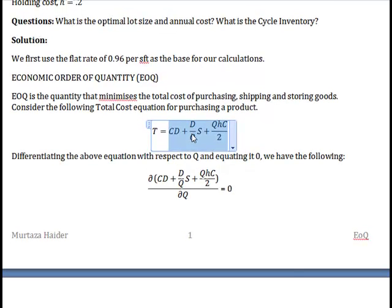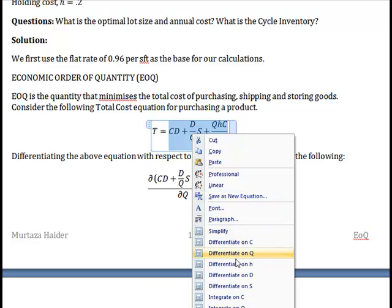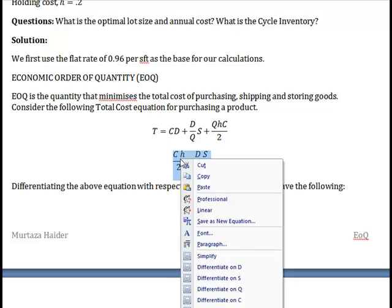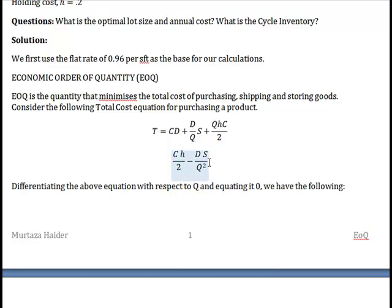So right here I right click and I say differentiate with respect to Q so I do that and here's my equation CH over 2 minus DS divided by Q squared and now then I reselect this and I say I would like to solve it for Q and in order to do that I would equate it to 0 first.